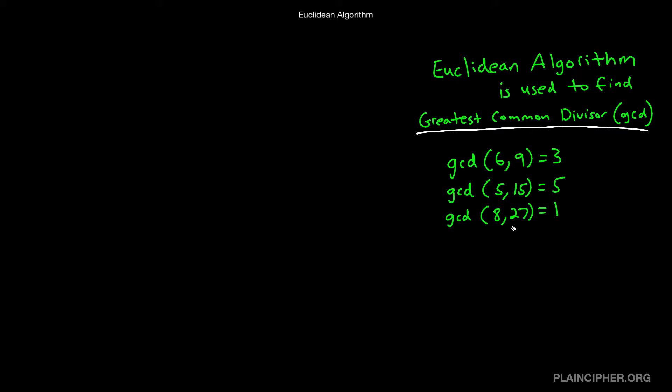Now back in high school or junior high, you were probably taught to use something called prime factorization to find the GCD. Well, let me show you a much better way. Well first, let's review what prime factorization is.